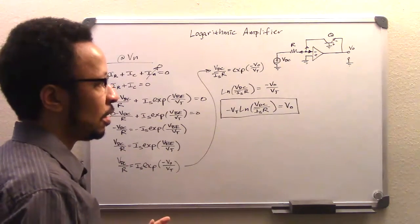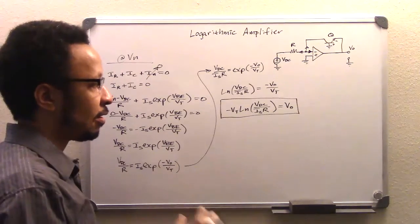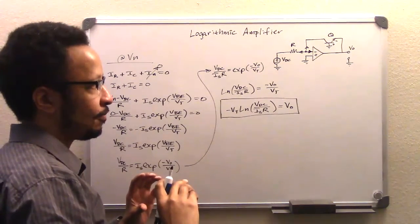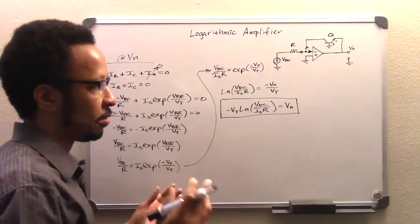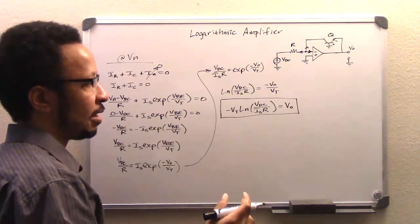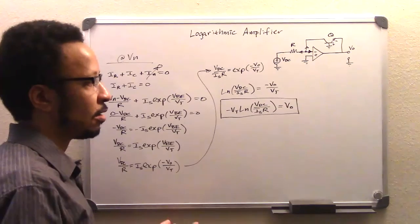what we could do is we're going to cascade over to another op amp and we're going to make that op amp negate this function so that it'll come out to be positive and make any other adjustments that we want to do in order to scale it in one way or the other.